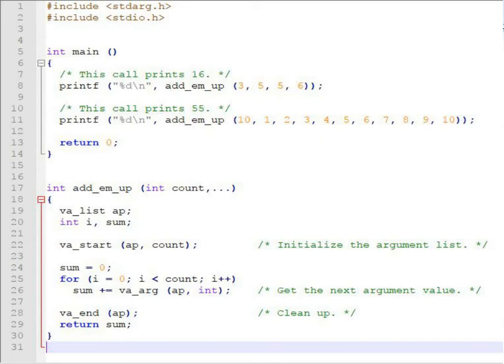And then in the main function first call is given in line number 8 to add underscore em underscore up. By doing this now int count will take value as 3 and the ellipsis will take other optional arguments as 5, 5 and 6. So by following this operation this will return a value called 16.